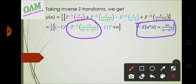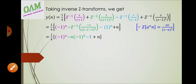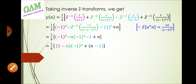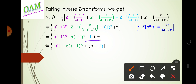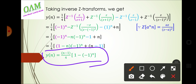Applying the formula Z⁻¹[aZ/(Z−a)²] = n·aⁿ for the repeated root terms. For (−1)ⁿ terms, we get n·(−1)ⁿ. Combining all terms using the inverse Z-transform formulas gives the final answer.